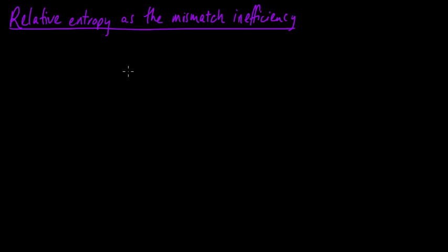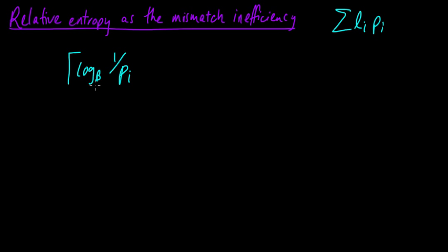Whenever we're designing a symbol code, we have to know the true probabilities — we have to know the P_i's — because we're trying to minimize our expected codeword length. In particular, when we're doing Shannon coding, we need to choose our lengths: we round up log base B of 1 over P_i, and we take that to be the length. We need to know the true P_i's to compute this quantity, and then we use the L_i's to get our code using the procedure in the Kraft–McMillan theorem.